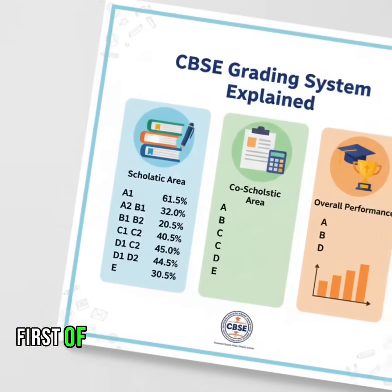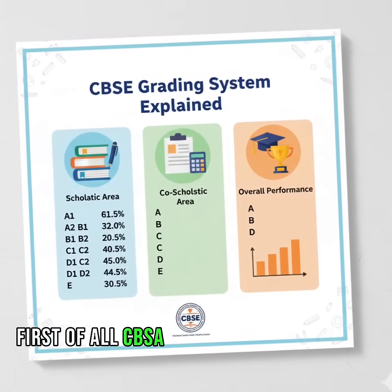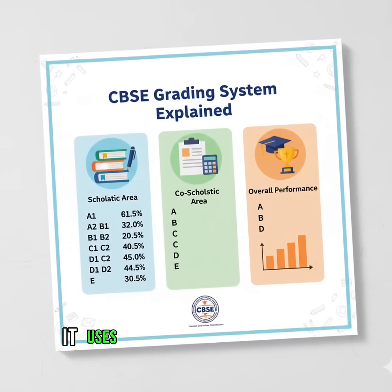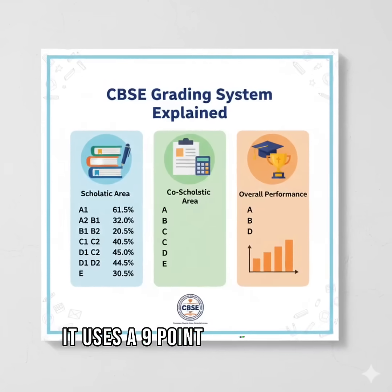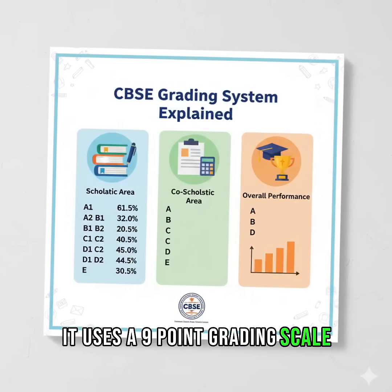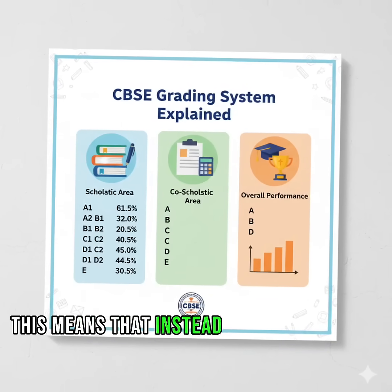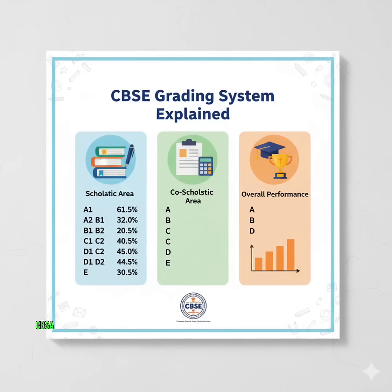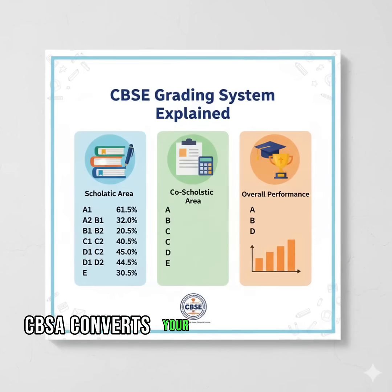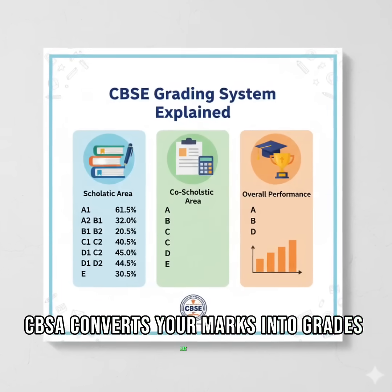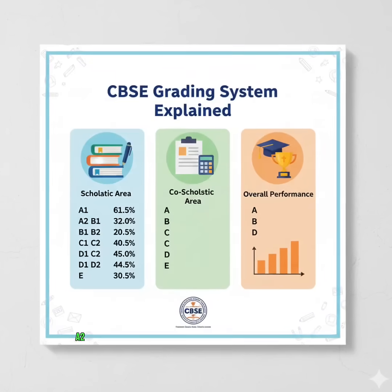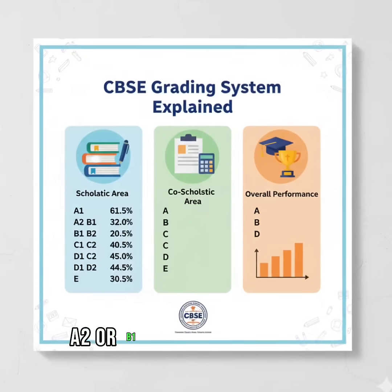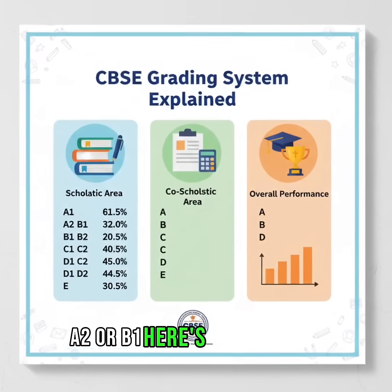First of all, CBSE doesn't just give marks. It uses a nine-point grading scale. This means that instead of writing marks like 85 or 72, CBSE converts your marks into grades like A1, A2, or B1. Here's how it works.